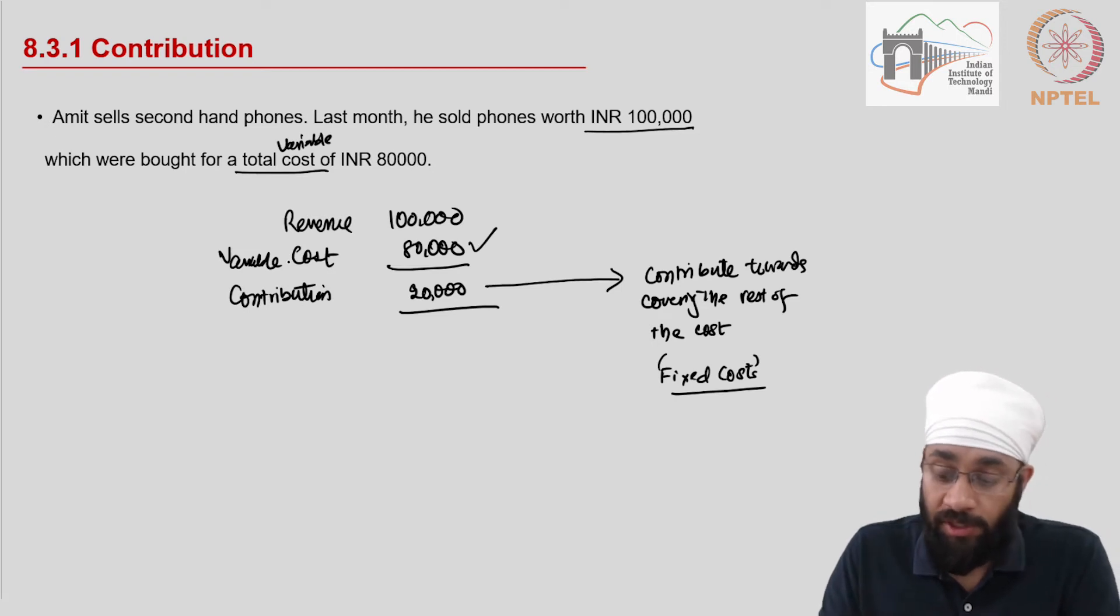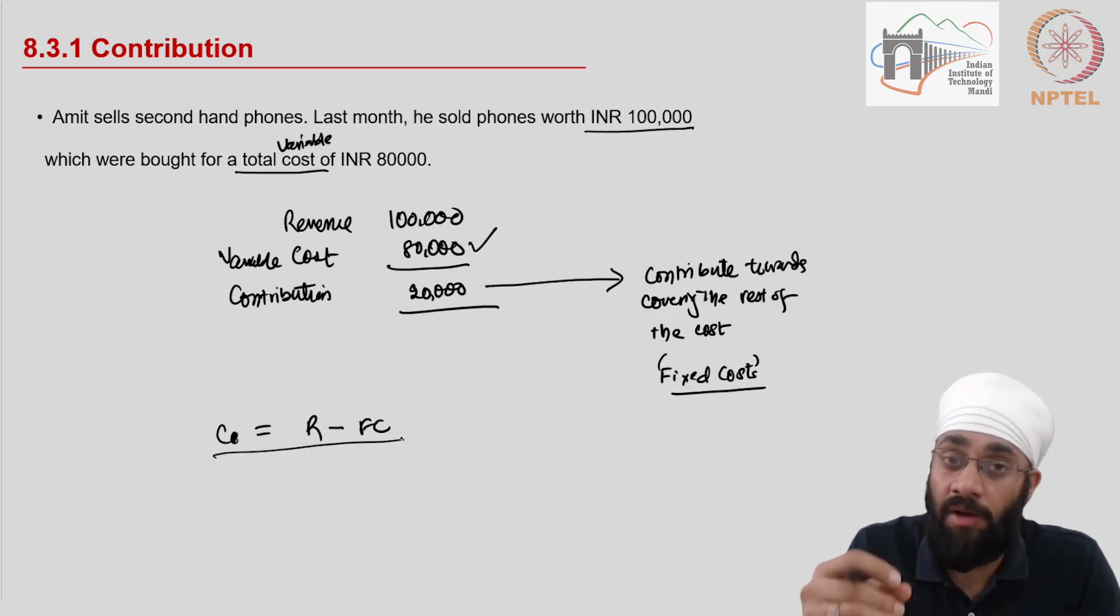So the question is, why don't you cover the fixed costs and then worry about the variable cost? Why don't you define contribution as C equal to revenue minus the fixed cost? Why don't you do this? This can be called a contribution as well. Well, there is a logic to that, and the logic is that in the business you first worry about covering your variable costs, and then you worry about covering your fixed costs.